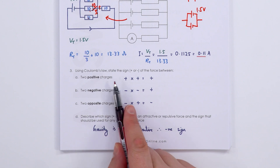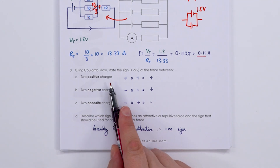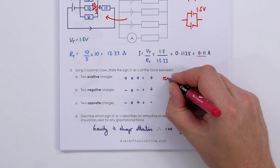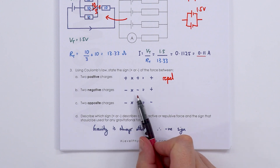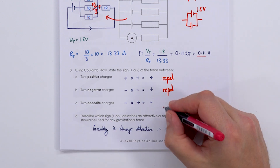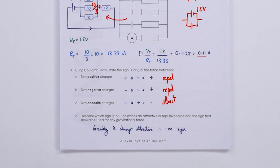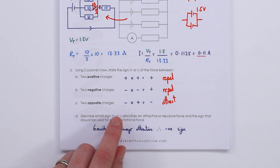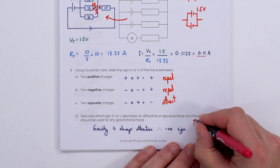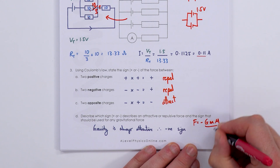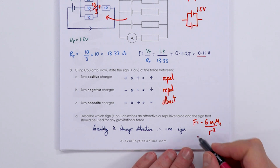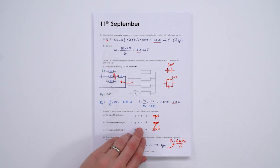Using Coulomb's law for signs: two positive charges give a positive force (repulsion); two negative charges also repel (negative × negative = positive); opposite charges attract (positive × negative = negative force). Gravity is always attractive, so Newton's law should have a negative sign: F = −GMm/r². The negative sign confirms gravity is always an attractive force.